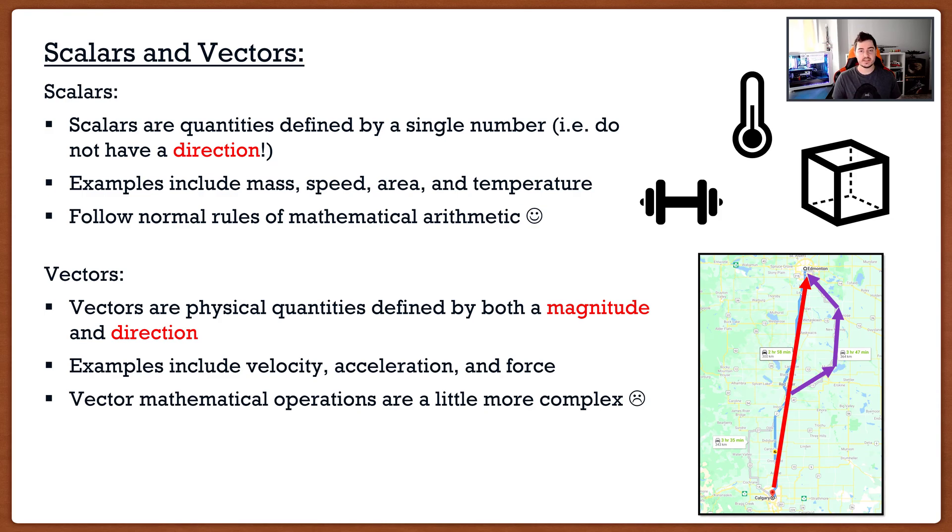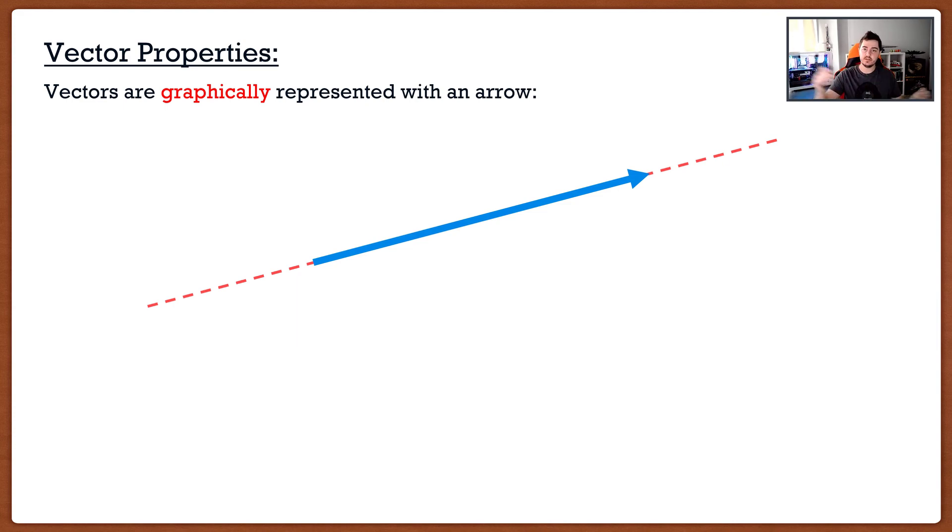The problem with vectors is that vectors follow different mathematical operations. It's not just as simple as taking one vector, adding it to another. The first thing we're going to talk about when it comes to vectors is vector properties. Vectors are graphically represented with an arrow. The line that the arrow follows is called the line of action. When we talk about moments in maybe video 10, you guys will see me use the word line of action a lot.